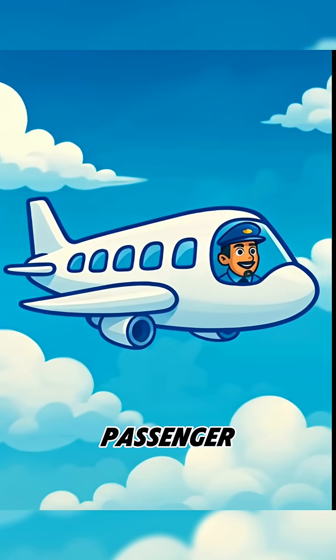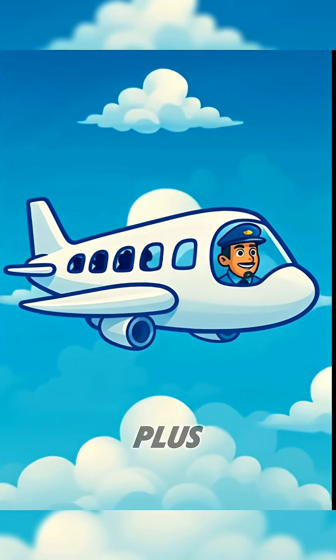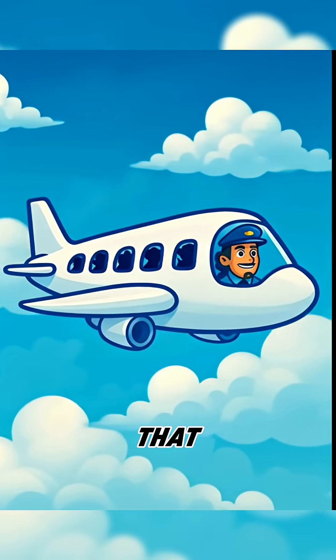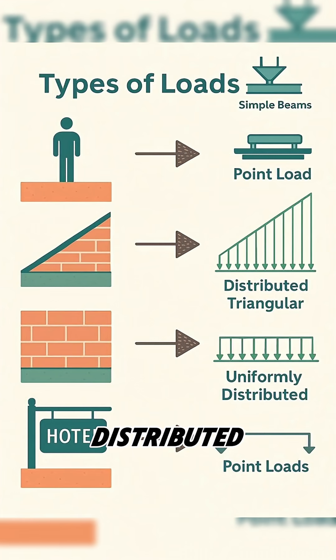An airplane doesn't just hold one passenger. It holds everyone on board plus the fuel tanks. How does it manage that? The answer lies in something engineers call distributed loads.